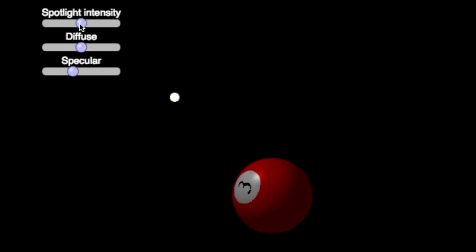Let's look at a virtual version of this physical situation. There are three sliders that you can control. Spotlight intensity, which is like controlling the brightness of the flashlight. A diffuse slider, which controls the dullness of the surface, or roughness. And a specular slider, which controls the shininess. You can also move the spotlight around, which is represented by a white dot.